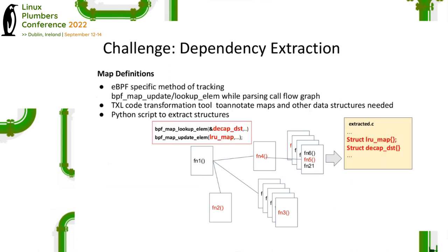For maps, during the function call graph traversal we track whether the function is a BPF map update or lookup element function, and if so, identify which specific map is being used. We use our TXL transformation tool to annotate the location of maps and all other structures and variables that the map uses in an annotated source file. Combining this information of which maps were used with this annotation, the Python script extracts and dumps the structures. For example, if the code uses the maps dcap_dest and lru_map in the original code base, we dump them in the same extractor.c file.